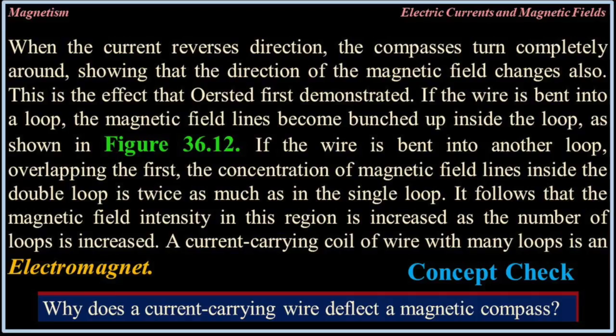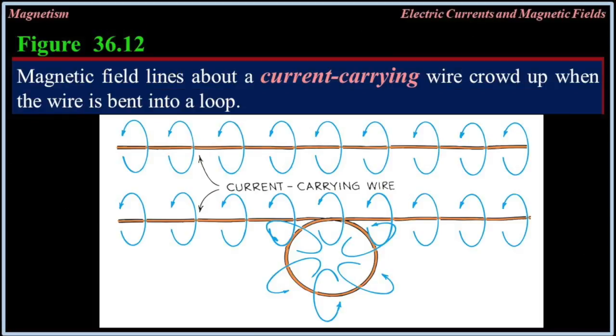The magnetic field intensity in this region is increased as the number of loops is increased. A current-carrying coil of wire with many loops is an electromagnet. Concept check: why does a current-carrying wire deflect a magnetic compass? Magnetic field lines about a current-carrying wire crowd up when the wire is bent into a loop.